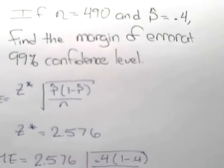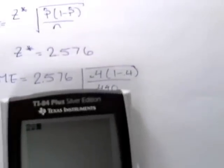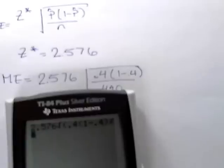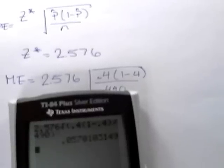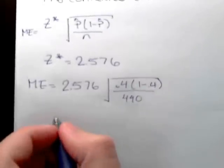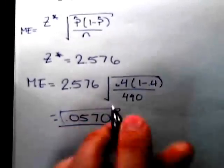Typing this in the calculator: 2.576 times the square root of 0.4 times 1 minus 0.4 divided by 490, and we get 0.0570, and this is the margin of error.